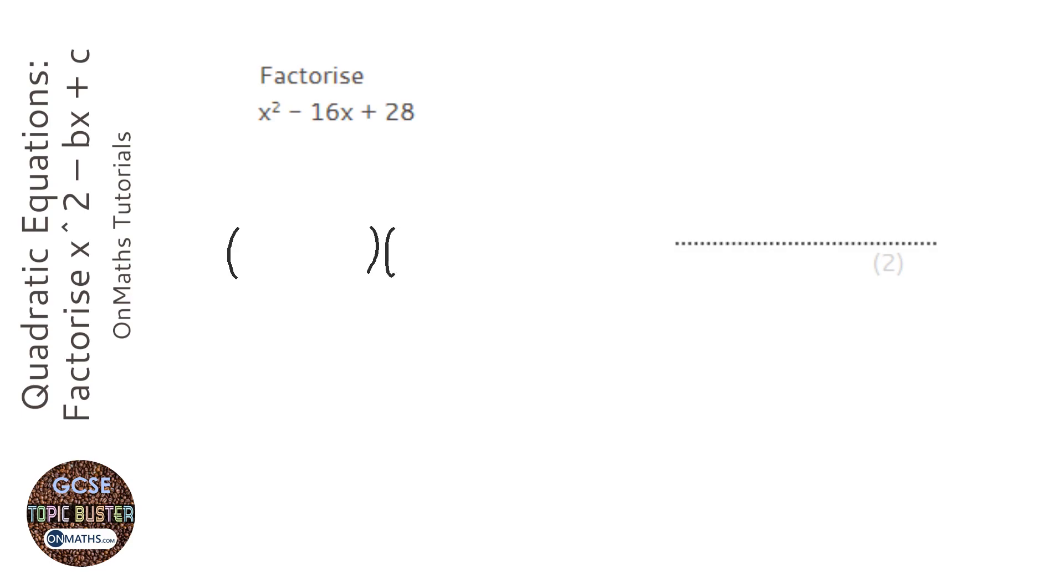So I'm always going to put two sets of brackets. And because it says x squared there and there's no number before it, the first two terms are going to be x. That's the nice easy bit.